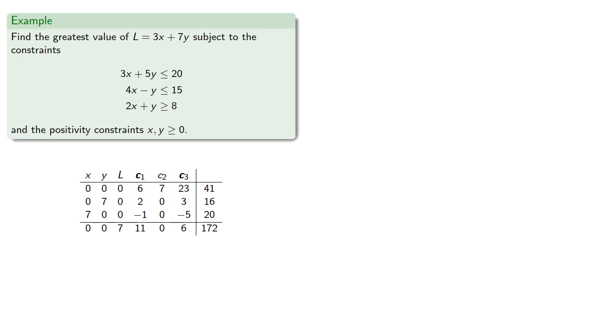Now, no coefficient in the L row is negative, so no further improvement in L is possible. So setting our free variables equal to 0 gives us our solution. And we don't really care about c1, c2, and c3 anymore. This is going to be our maximum value subject to our constraints.